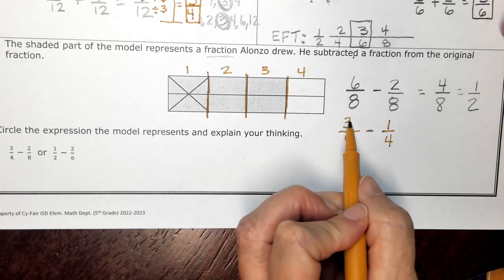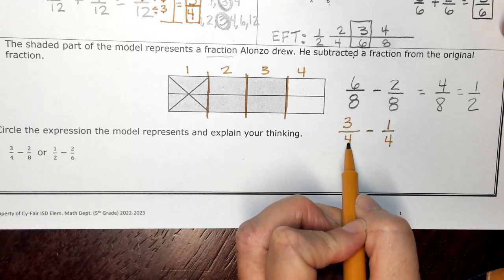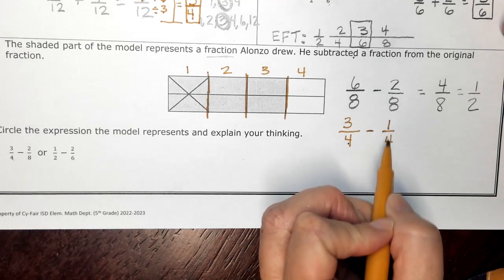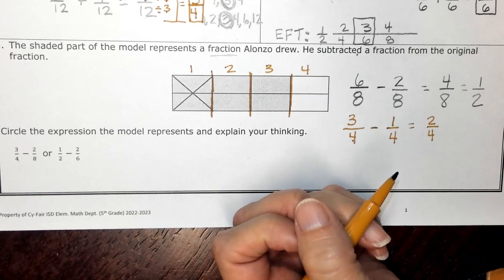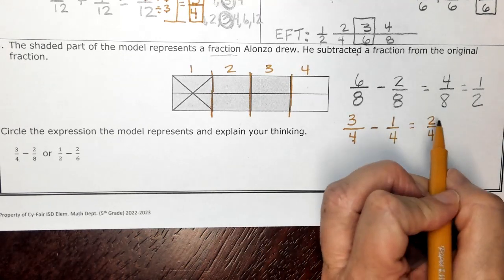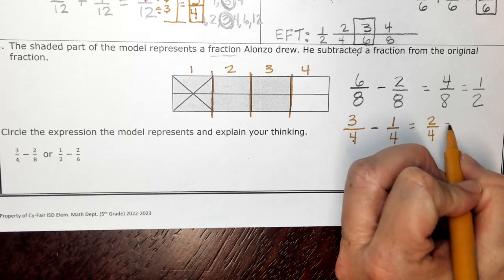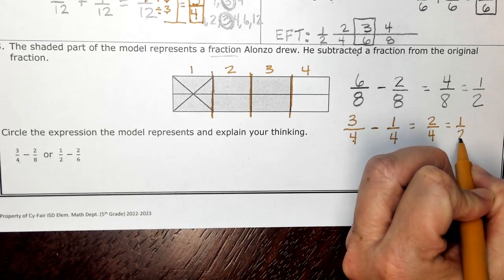So I have three fourths minus one fourth, which would give me two fourths. Again, that makes sense because we already know two is half of four. So that is equivalent to one half.